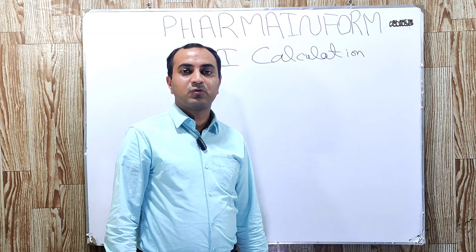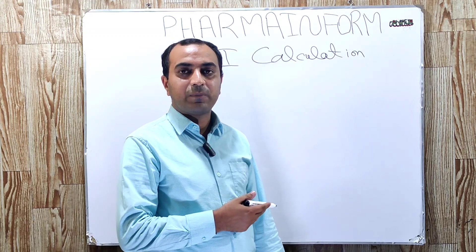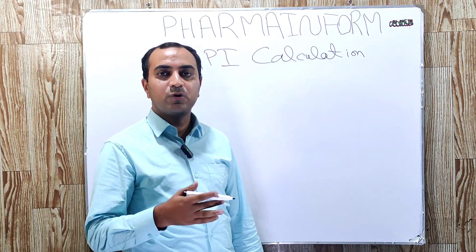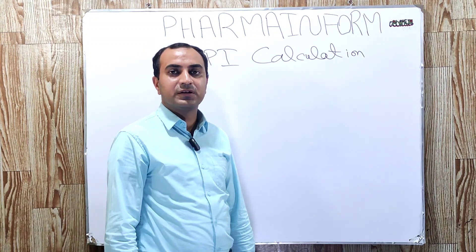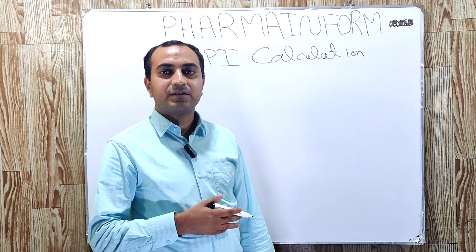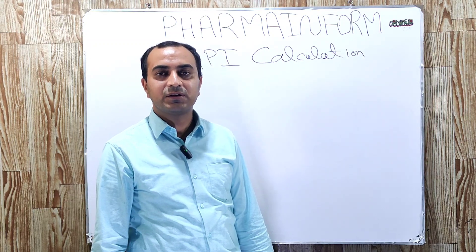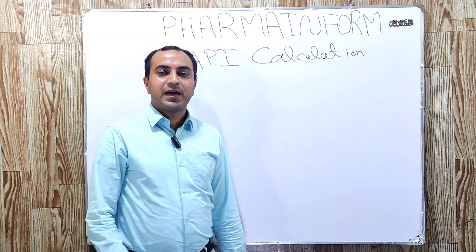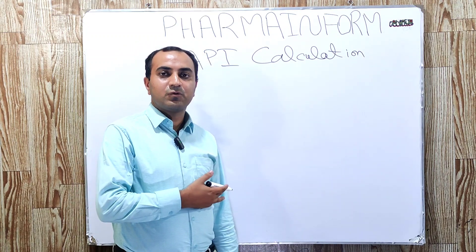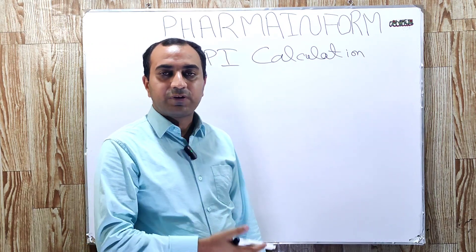Suppose that we want to calculate the quantity of active pharmaceutical ingredient for a given number of tablets — how we will calculate. Most of the people working in pharmaceutical industries are not able to calculate active pharmaceutical ingredients for a given number of tablets. Most people think that the job of R&D is to calculate this, but being a pharmacist everyone must be familiar with these basic calculations — how we can calculate an active pharmaceutical ingredient quantity.